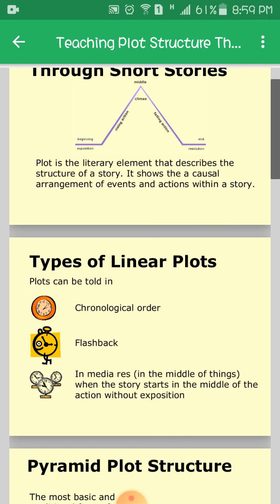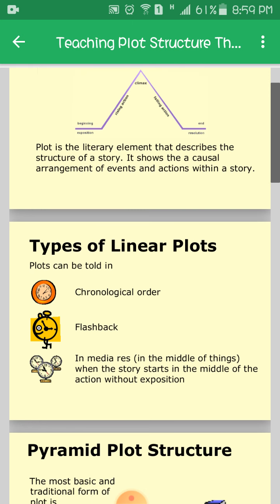Types of linear plots: what is linear? Linear is related to chronological. Chronological means when events are in order according to their time and date. Plots can be told in chronological order, as flashback, or in medias res — when the story starts in the middle of the action without exposition.